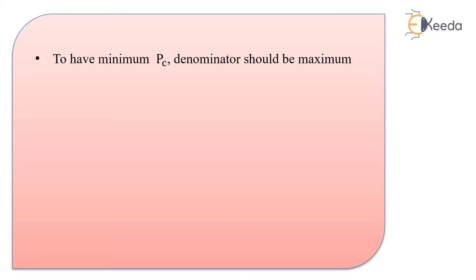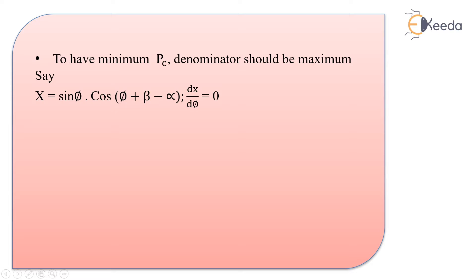Looking at the equation, this power is a function of the shear angle phi, and phi appears only in the denominator. If we assume the denominator is equal to x, which is sin phi into cos of (phi plus beta minus alpha), we can minimize this power by maximizing the denominator. If we differentiate x with respect to phi and set it equal to zero, we will get the condition.